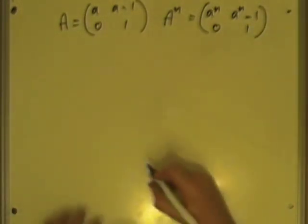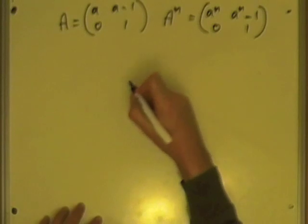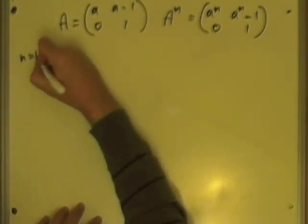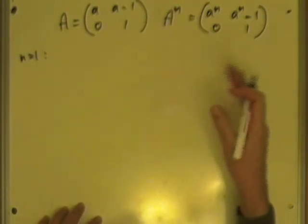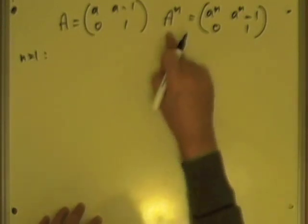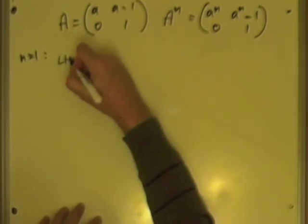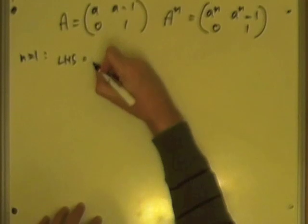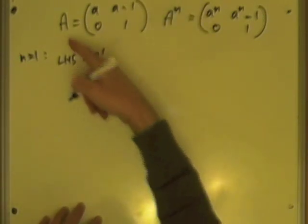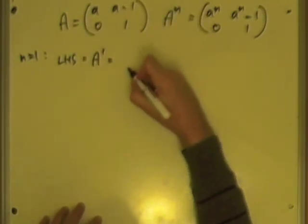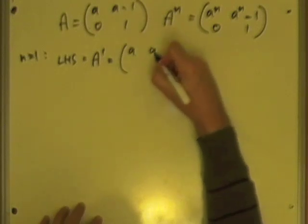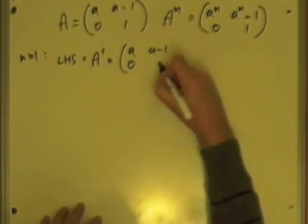Now, same as before, check that it's going to be true to start with. Check for N equals 1 that it actually works. If N equals 1, using this expression, that means taking the left-hand side, I would have A to the 1, but I know that A to the 1 is this, so A to the 1 would be A, A-1, 0, 1.